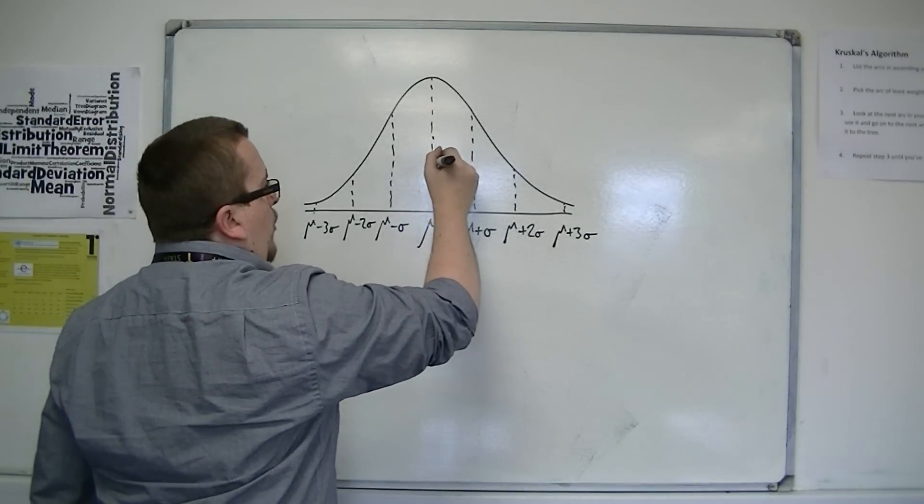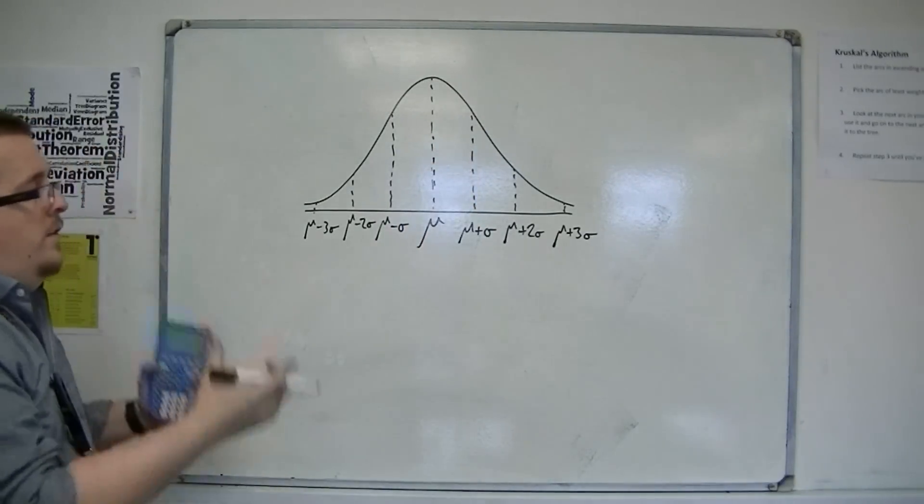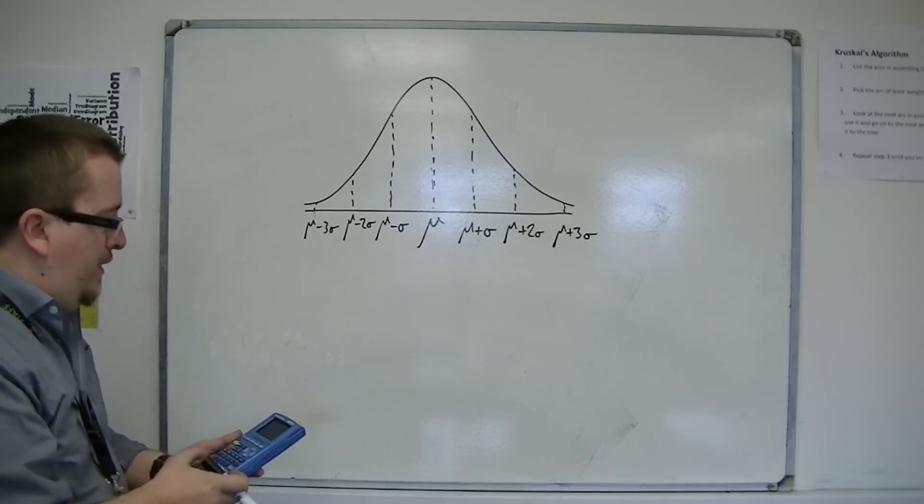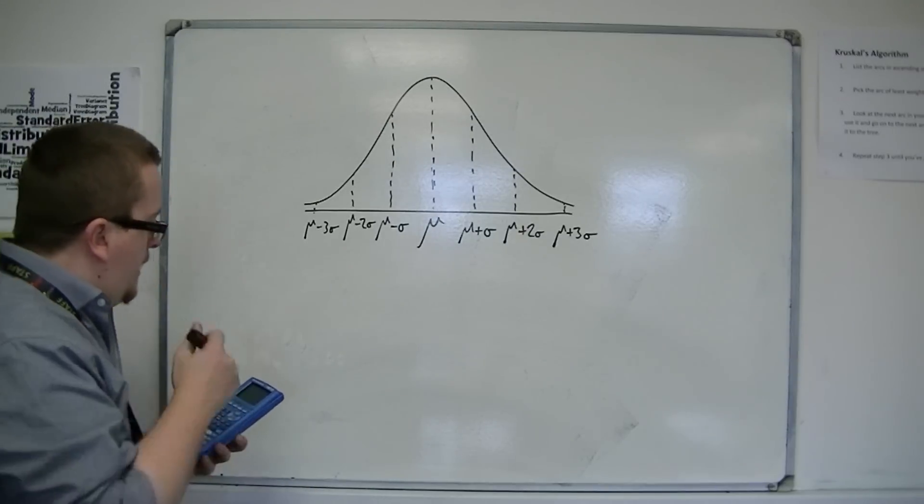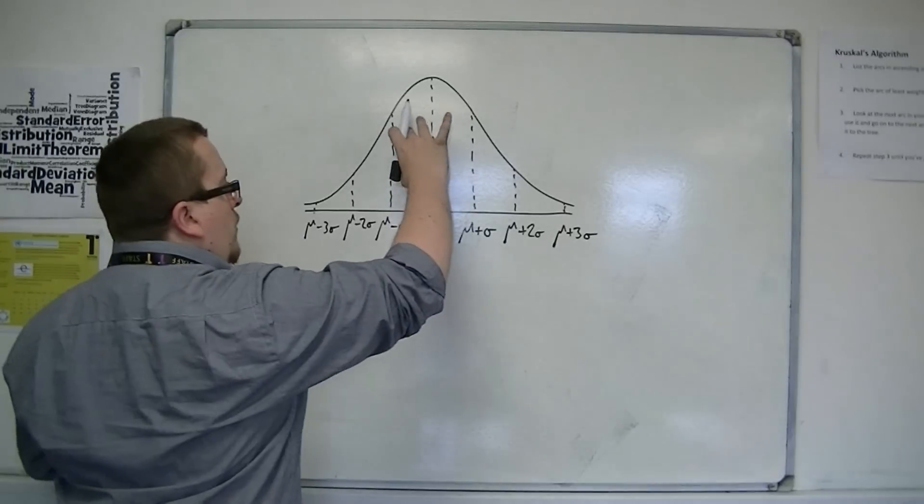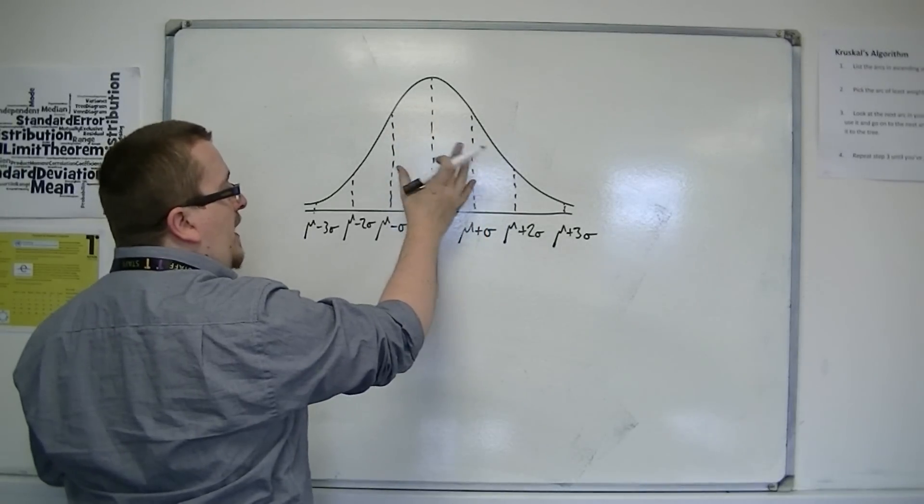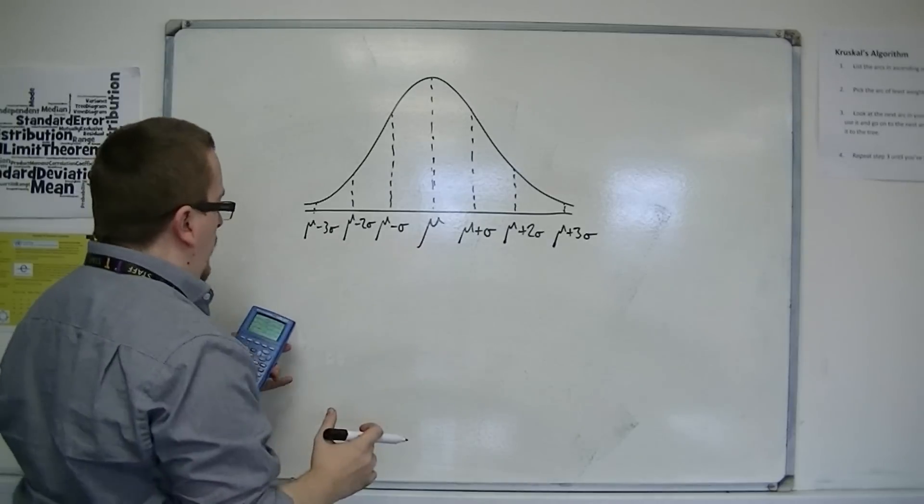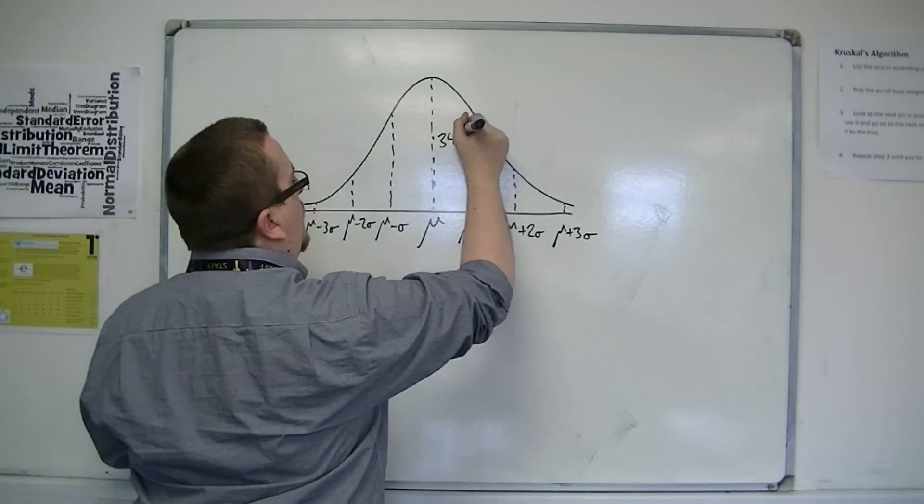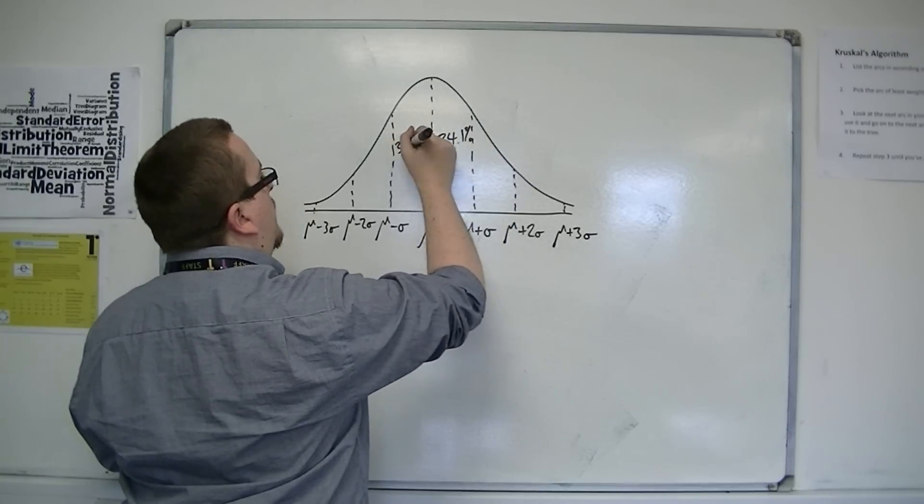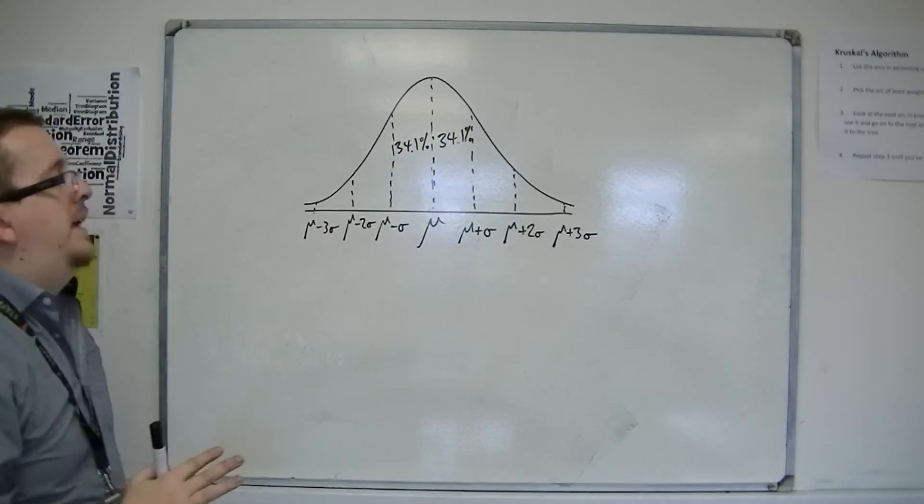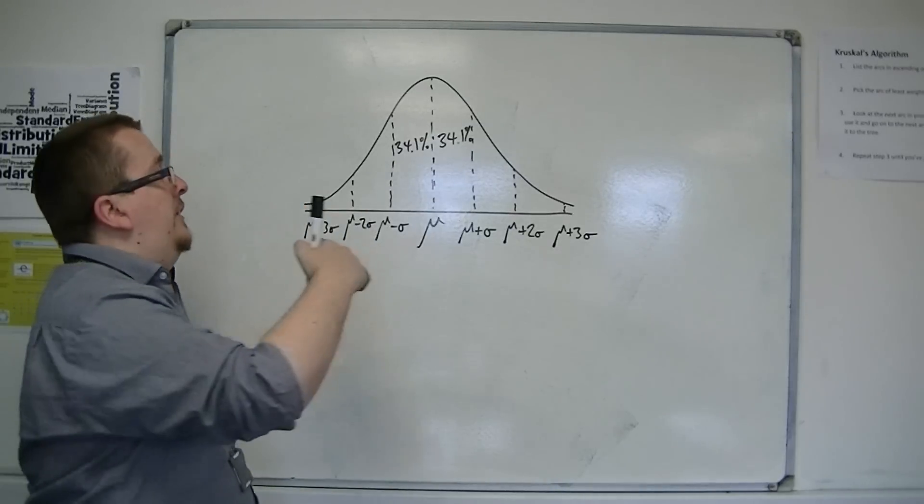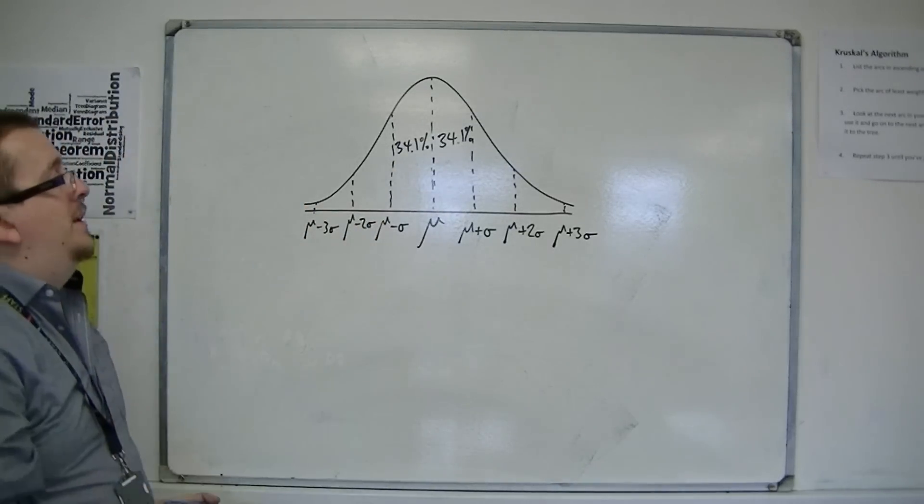And that's quite an important thing to remember, because this is what we would expect. So the actual percentages that we're looking at here, between two standard deviations of the mean, so one standard deviation either side of the mean, you're looking at roughly 34.1% of the data either side of that mean. So that middle section together is 68.2% of the population.